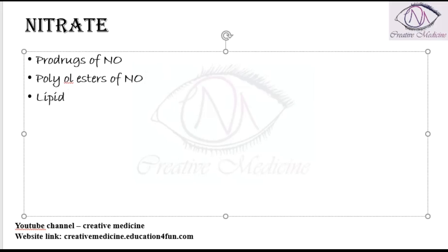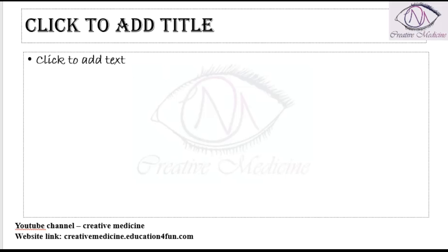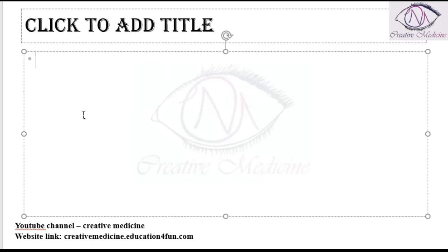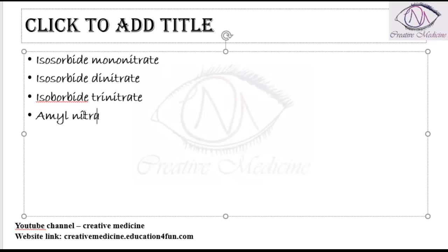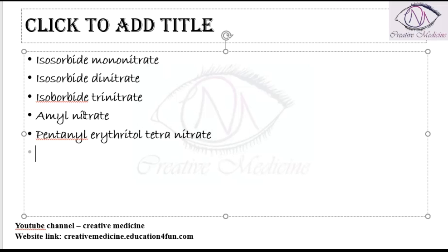These nitrates are lipid soluble. They contain different types: we have isosorbide mononitrate, isosorbide dinitrate, isosorbide trinitrate, amyl nitrate, pentaerythritol tetranitrate, and erythritol tetranitrate.